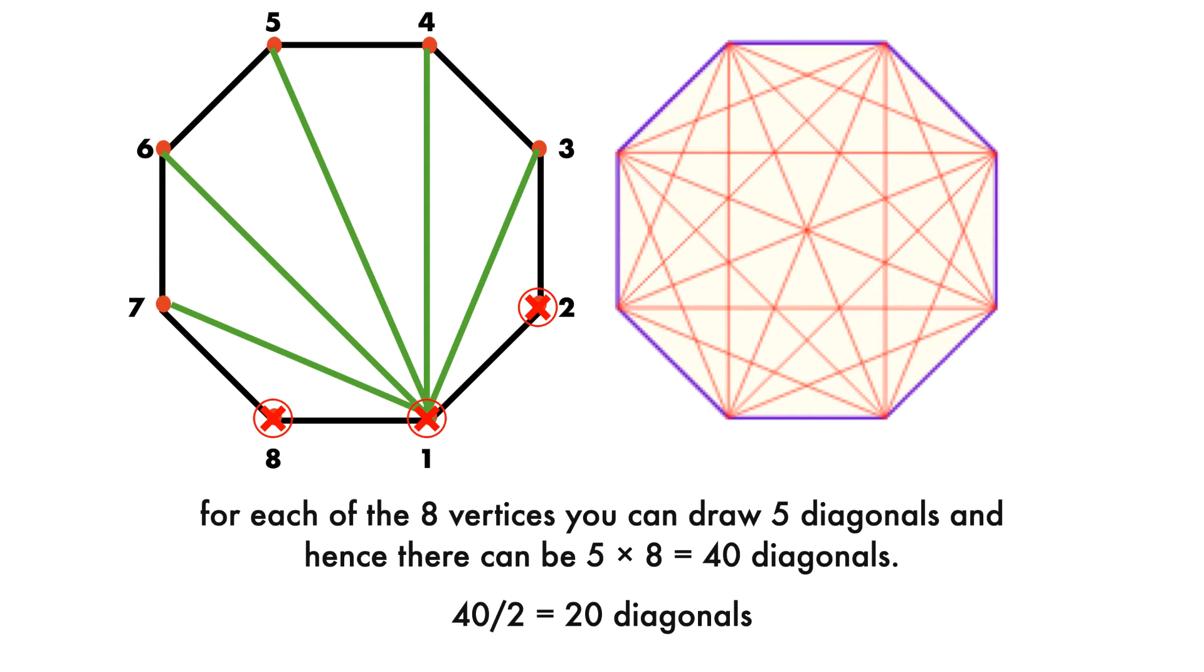However, this includes similar pairs, that is 1-6 and 6-1, 2-4 and 4-2, etc. So we divide this by 2. So the answer is 20.